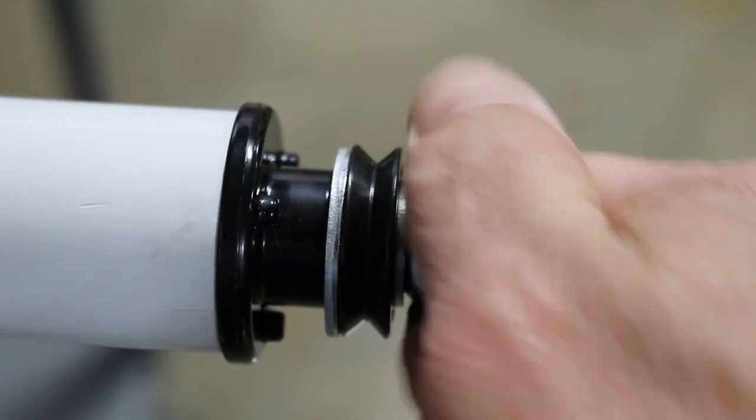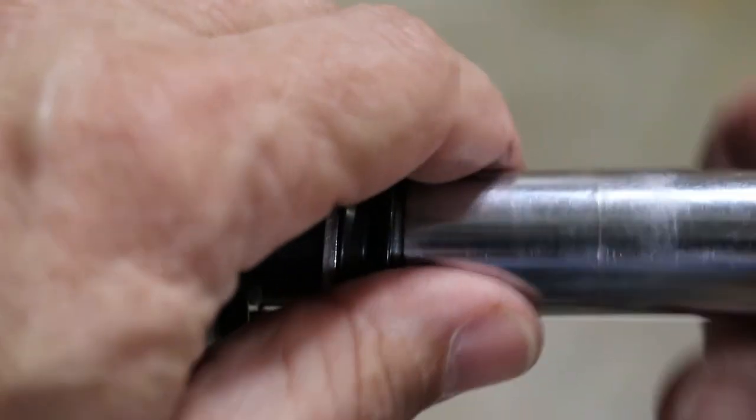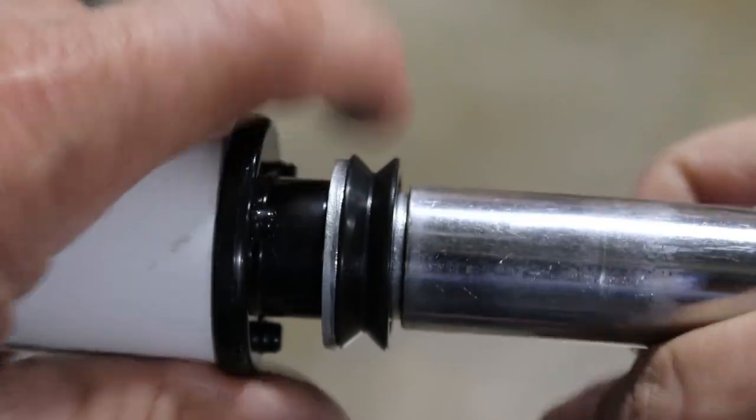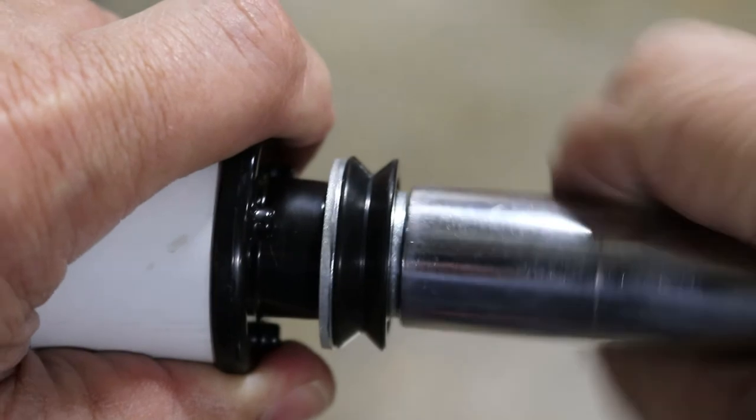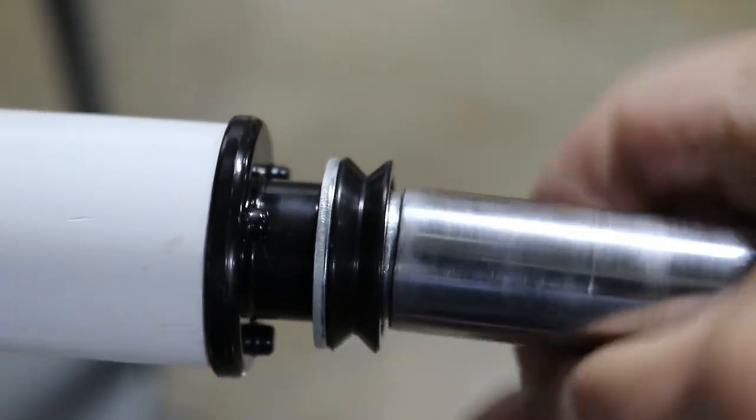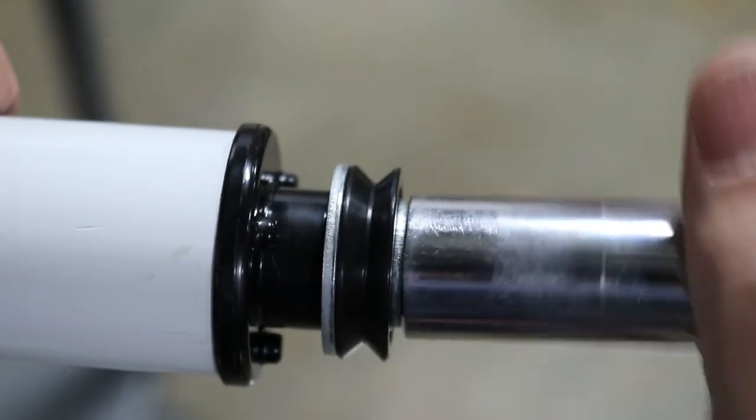Tighten it down until it's finger tight. Then take your wrench. Tighten it until it's good and snug. Again, you should have about a quarter inch of that bolt sticking out.